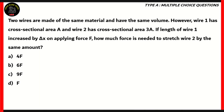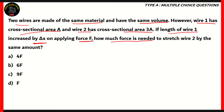Let's look at another question before we close this out. Two wires are made from the same material and have the same volume. Wire 1 has cross-sectional area A, and wire 2 has cross-sectional area 3A. If the length of wire 1 increases by delta x on applying a force F, how much force is needed to stretch wire 2 by the same amount? So since we have a lot of data here, we need to note it down. First of all, the two wires are made of the same material.